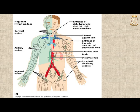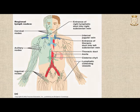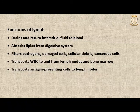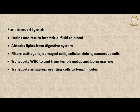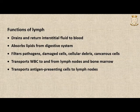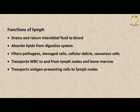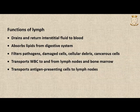Lymph formed in the digestive system is known as chyle. It contains various dietary lipids and looks milky white because of its high lipid content. The primary functions of the lymphatic system include draining and returning interstitial fluid to the blood, absorbing and returning lipids from the digestive system, filtering pathogens, damaged cells, cellular debris, and cancerous cells, transporting white blood cells to and from lymph nodes and bone marrow, and transporting antigen-presenting cells to lymph nodes where the immune response occurs.